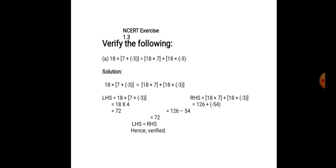Now, let us apply these properties in solving these sums. First, verify the following: 18 into (7 plus of minus 3) is equal to 18 into 7 plus 18 into minus 3. We are going to use distributive property to verify it. Left hand side: 18 into (7 plus of minus 3). 7 plus of minus 3 means 7 minus 3, which gives 4. 18 into 4 is 72. On the right hand side: 18 into 7 plus 18 into minus 3. 18 sevens is 126, plus 18 into minus 3 is minus 54. So, 126 minus 54 is 72. LHS is equal to RHS. Hence, the given equation is verified.